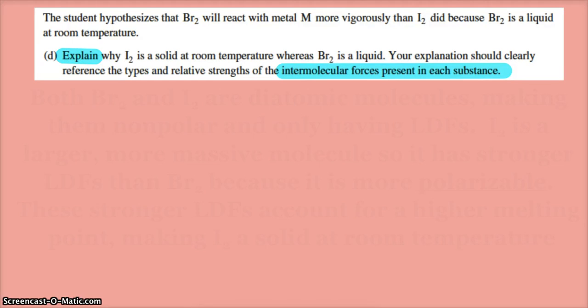All right, last part. The student hypothesized that bromine will react with the metal more vigorously than iodine because bromine is a liquid at room temperature. So explain why iodine is a solid at room temperature whereas bromine is a liquid. Our explanation should clearly reference the types and strengths of the intermolecular forces present. So we're comparing bromine and iodine IMFs.